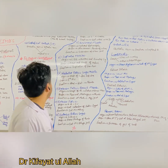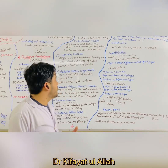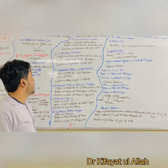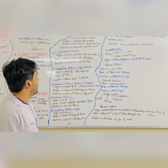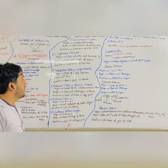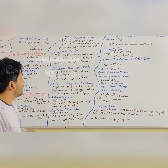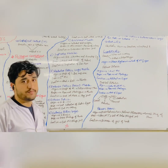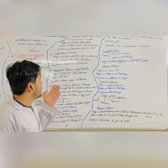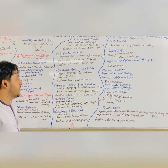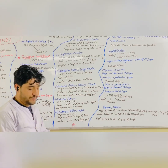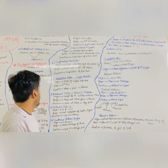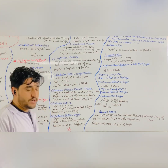Good evening. My name is Patullah. Today I am going to explain the muscles of the upper limb. The supinator muscle — its origin is the lateral epicondyle of the humerus and other ligaments. Its insertion is the neck and shaft of the radius. Its function is supination of the forearm. The abductor pollicis longus originates from the shaft of the radius and ulna. Its insertion is the base of the first metacarpal. Its function is abduction and extension of the thumb.